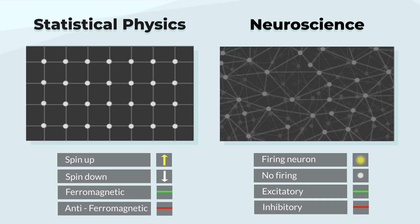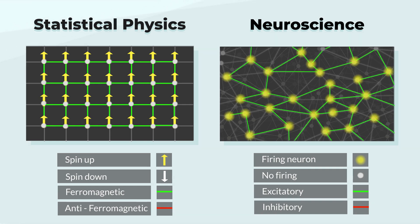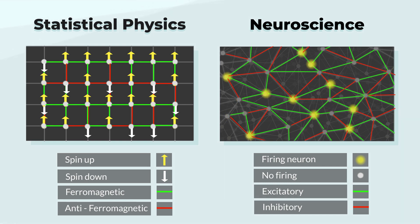With only excitatory interactions, all neurons fire. However, a mixture of excitatory and inhibitory synapses, similar to spin glasses in statistical physics, forms a balanced system.